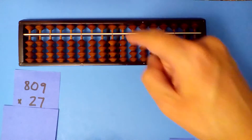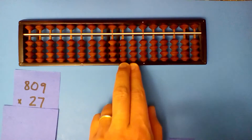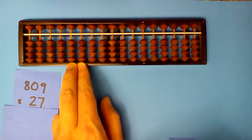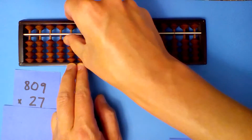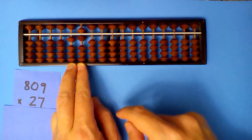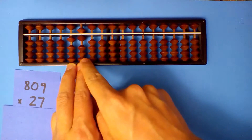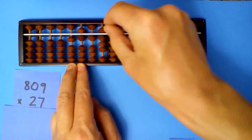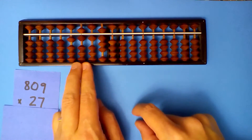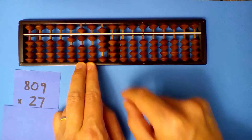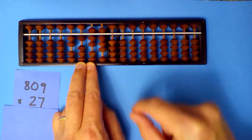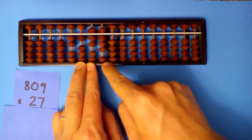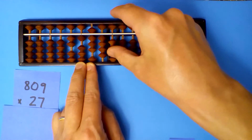809 times 27. Tenths and hundredths, 5 digits: 1, 2, 3, 4, 5. We start: 2 times 8 is 16, 2 times 0 is 0, 2 times 9 is 18. Next we do the 7: 7 times 8 is 56, 7 times 9 is 63, 7 times 0 is 0, 7 times 9 is 63.